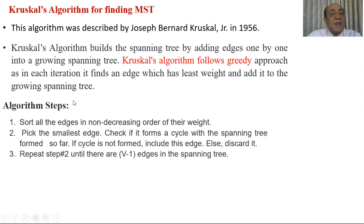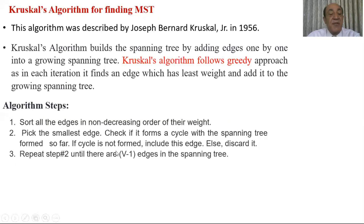The steps in Kruskal's algorithm: first, sort all the edges in non-decreasing order of their weight. Then pick the smallest edge and check if it forms a cycle with the spanning tree formed so far. If a cycle is not formed, include this edge; otherwise, discard it. Repeat step two until there are V minus one edges in the spanning tree, where V is the number of nodes in the graph.